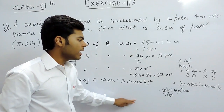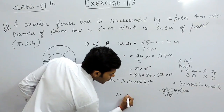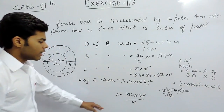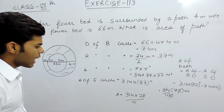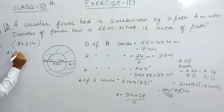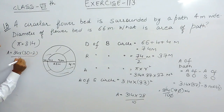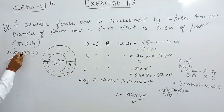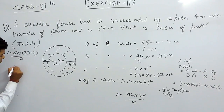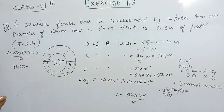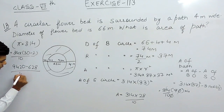So the area of the path equals 3.14 multiplied by 28 divided by 10. We can write 28 as 30 minus 2, so this becomes 3.14 multiplied by (30 minus 2) divided by 10. Multiplying 3.14 by 30 gives 94.2, which is 942 plus a zero; then 3.14 multiplied by 2 gives 6.28, written as 628, divided by 10.